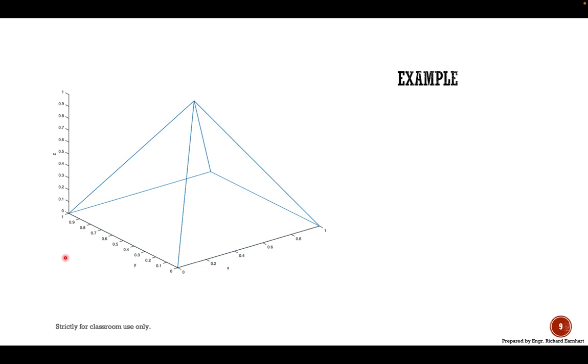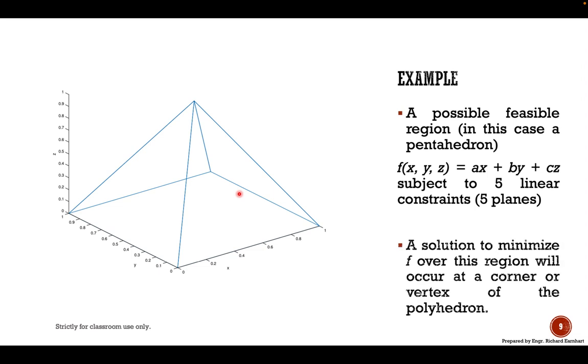For example, here we have a polyhedron containing five faces or five plates, so this is actually a pentahedron. A possible feasible region in this case. You have the function f of xyz in three-dimensional space represented by ax plus by plus cz, which is subject to five linear constraints. Five plates actually, so this one represents a plane in three-dimensional space. A solution to minimize the function f over this pentahedron will occur at a corner point or vertex of the polyhedron or pentahedron. Here we have one, two, three, four, five vertices.